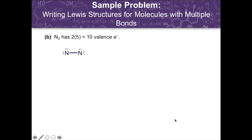For nitrogen, after distributing the remaining valence electrons following single bond formation, each nitrogen atom does not attain an octet. If we change a lone pair to a bonding pair to make a double bond, both nitrogen atoms still do not have an octet. So we move a second lone pair to make a triple bond, which now satisfies the octet rule — giving 2, 4, 6, and 8 valence electrons for each nitrogen atom.